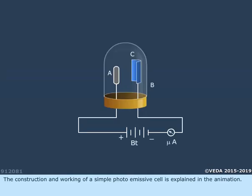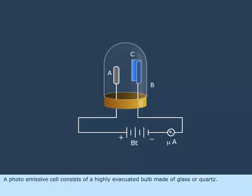The construction and working of a simple photoemissive cell is explained in the animation. A photoemissive cell consists of a highly evacuated bulb made of glass or quartz.